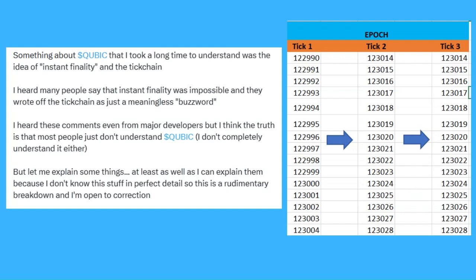I made this post recently on X, these posts here. I just made up this image here for this video — obviously it's a poor image, but I just want to make the point as simply as possible so that it makes sense. Basically, for any of you guys that don't understand Qubik, most cryptos are based on what's called a blockchain, but Qubik is based on a tick chain. Qubik is the first tick chain. Something I took a long time to understand was the idea of instant finality, and I heard many people say that instant finality was impossible and wrote off the tick chain as just a meaningless buzzword.